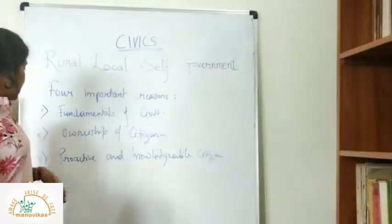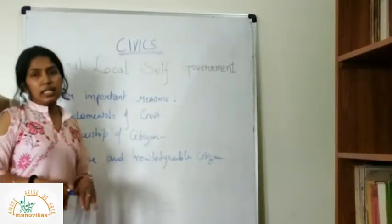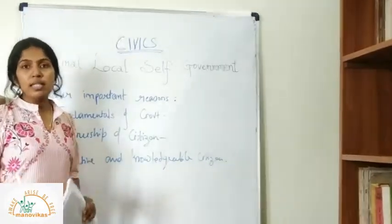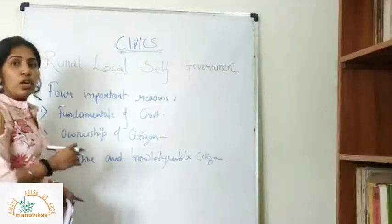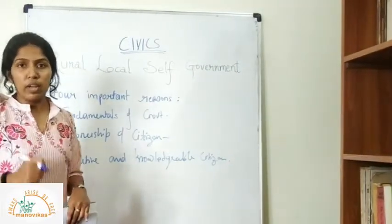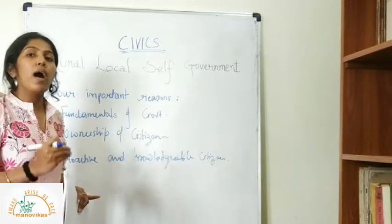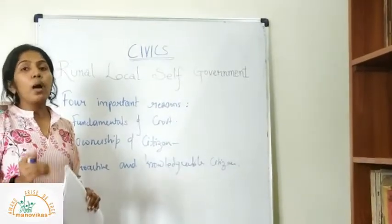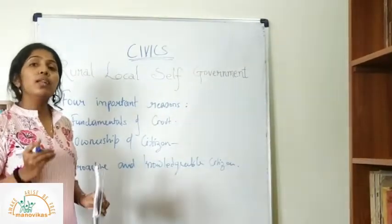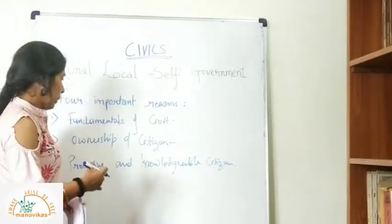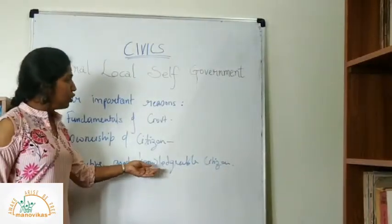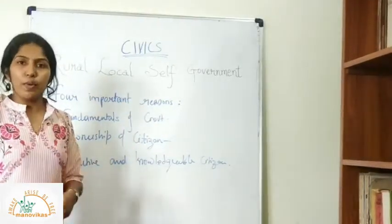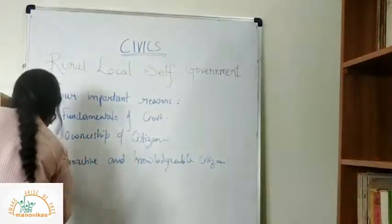The third point is proactive and knowledgeable citizens. As I mentioned earlier, we as citizens should be very active in choosing our government as well as understanding how it functions. If it is not functioning well, we should know how we can contribute to making it function well. We also need to know basic knowledge of our government and our constitution, which makes us responsible citizens.